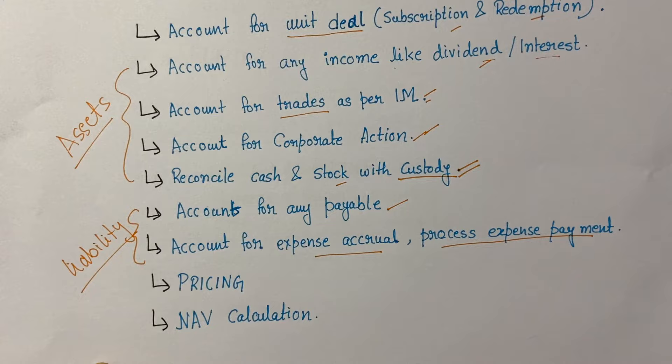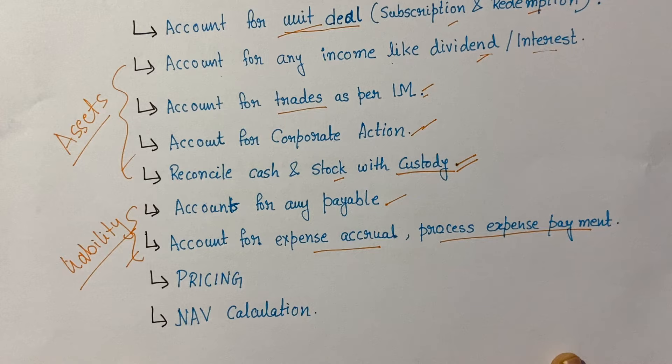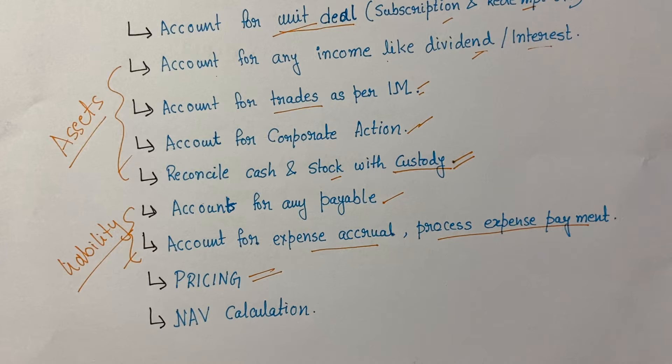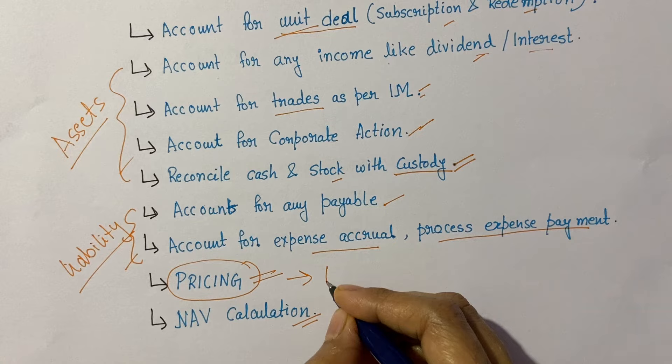Once unit dealings, assets, and liabilities are taken care of, the final part is pricing. Pricing means evaluating the current price for each security in the fund's portfolio — equities, derivatives, swaps, fixed income, and other holdings. Combining all these prices creates the final market value, after which the NAV calculation is done. This pricing component also feeds into the asset side of the NAV.